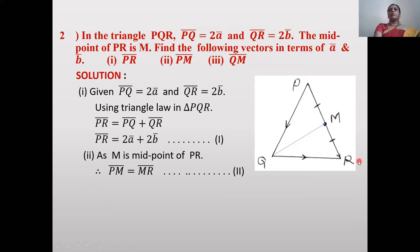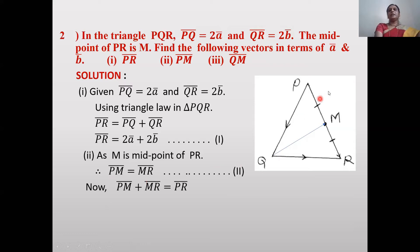Since M is the midpoint of PR, PM̄ and MR̄ are equal vectors — they have the same direction (from P to M and M to R respectively) and the same magnitude. So PM̄ = MR̄. Suppose this is equation 2. Then PM̄ + MR̄ = PR̄.